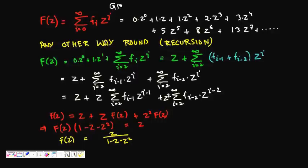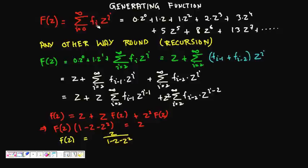We will look at what is known as the generating function. It's a concept where we convert a sequence into a mathematical function or polynomial of infinite degree. We define F(z) as the summation from i=0 to infinity of F(i)·z^i, so the coefficient of z^i is the i-th Fibonacci term.